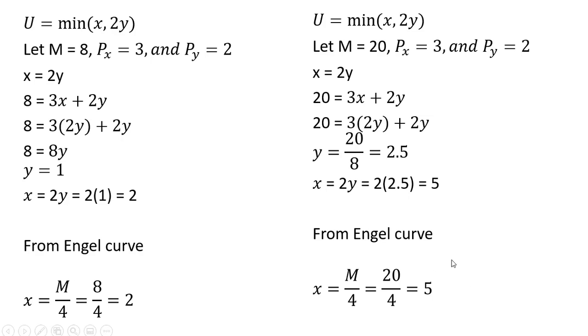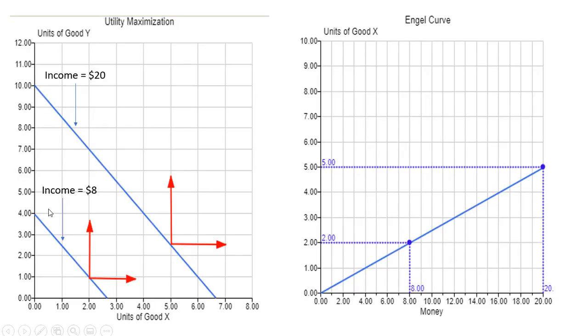So in terms of a graph, here's our utility maximization on the left. Here's our budget constraint when we have an income of $8. And here is our indifference curve. And we found that utility maximization occurred at 1 and 2, one unit for good y, two units for good x.